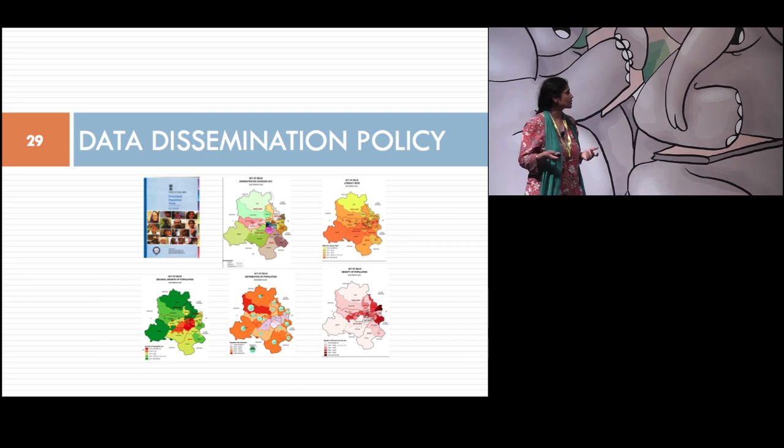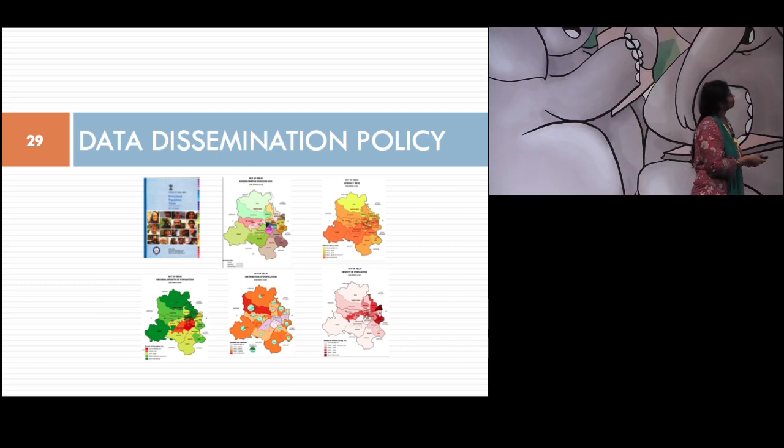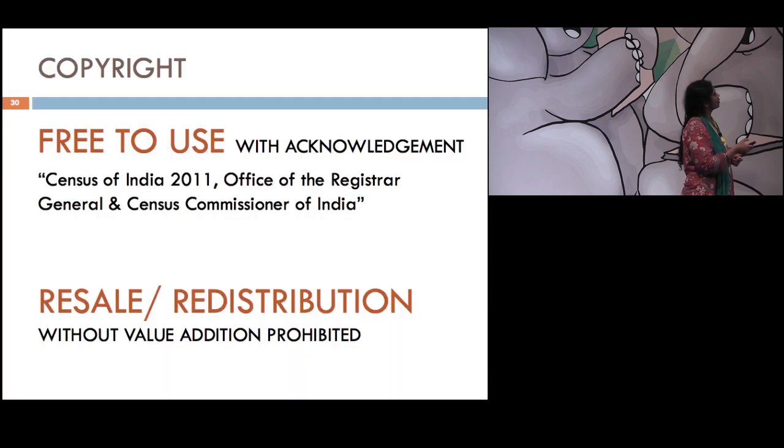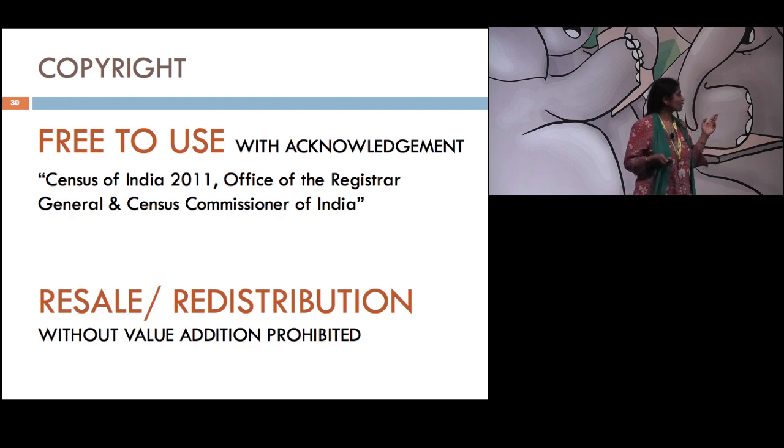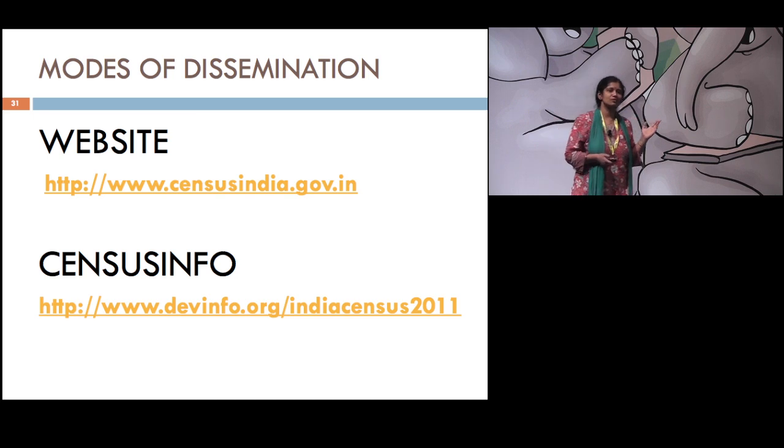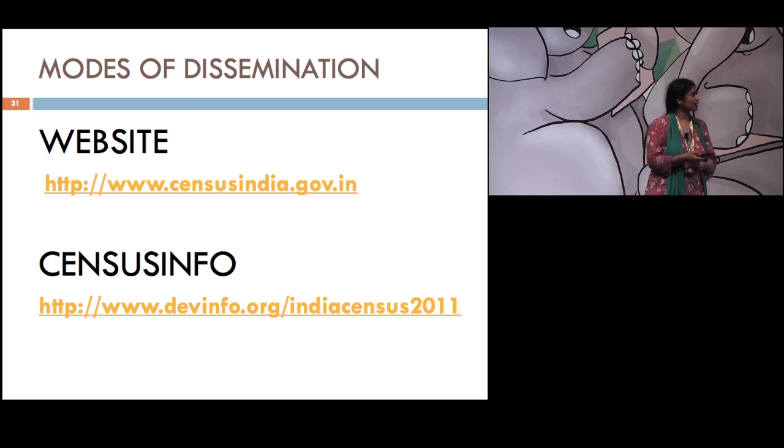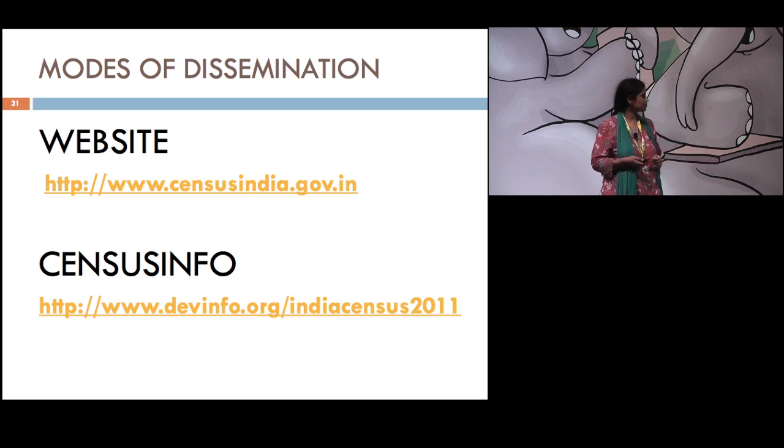I think a lot of you would like to know exactly what is our data dissemination policy. About the copyrights, you are free to use our data as long as you give us acknowledgment. On the other hand, please don't try to resell or redistribute our data unless you are doing some value addition to it. So that's our data use policy. I'm sure most of you have seen our website. If you have not, please do see it. There's lots and lots of things on it. And there's another product that I'd like to talk about called Census Info which is developed by DevInfo, an organization which works for the UN. And what they've done is they've created a software which you can freely download and which contains also the data sets themselves. All the data that has been released till now, plus all the shape files. And on this basis, you can develop your own tables, your own graphs, and your own maps. You can even overlay your maps and superimpose them. So this is just fantastic. Please do look at it.